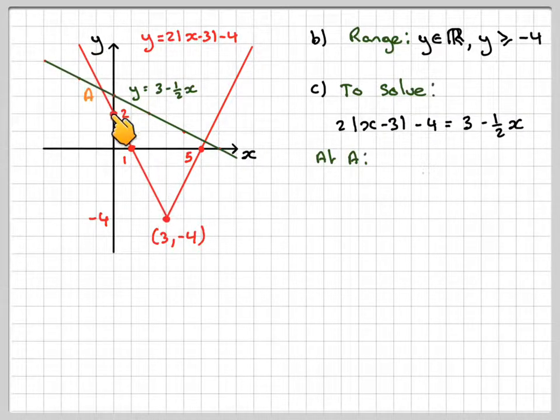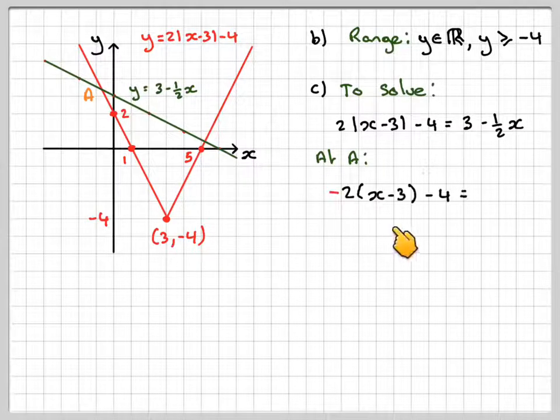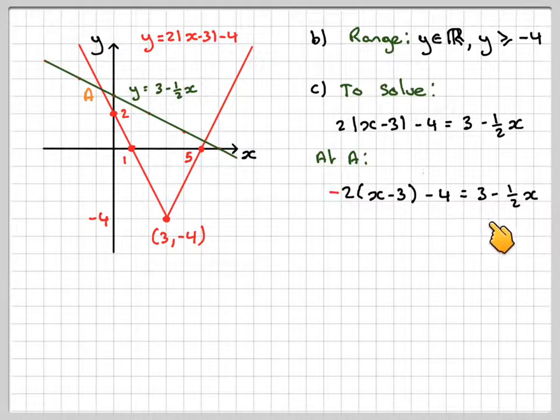This bit here is where it's minus, so therefore we need to put a minus sign in front of this. So, we get minus brackets, x minus 3 minus 4 is equal to 3 minus a half x. And we now solve that.